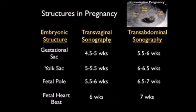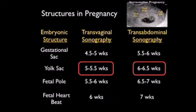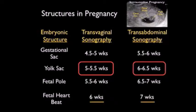Here's a table showing pregnancy structures and when they're seen on transvaginal versus transabdominal sonography. The gestational sac appears at about 4.5 to 5 weeks on transvaginal sonography and about a week later on transabdominal sonography. The yolk sac is seen at about 5 to 5.5 weeks on transvaginal sonography and a week later on transabdominal sonography — circled in red, as this is really the key to diagnosing an intrauterine pregnancy. The fetal pole appears at about 5.5 to 6 weeks, and fetal heartbeat at about 6 weeks on transvaginal sonography and 7 weeks on transabdominal sonography.